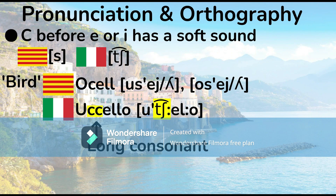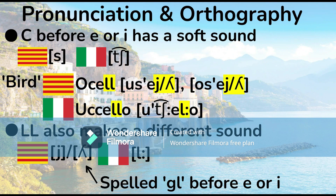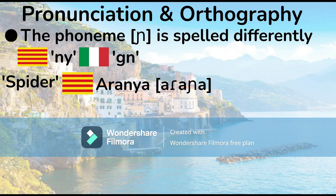Another interesting difference is that double L has a different sound. In Catalan it's pronounced 'l·la' or 'l·la,' but in Italian it's just a long L sound. Note that G-L before I or E in Italian makes the same sound 'lya.' The phoneme 'nya' is spelled differently — in Catalan it's spelled N-Y, but it's G-N in Italian. For example, the word for spider: 'aranya' in Catalan, 'aragna' in Italian.